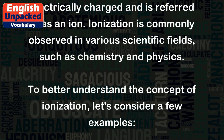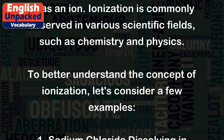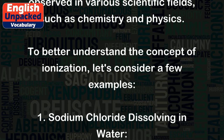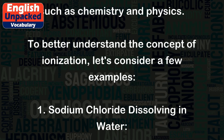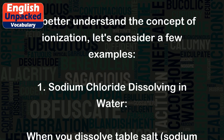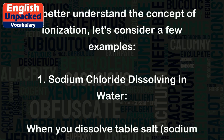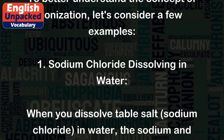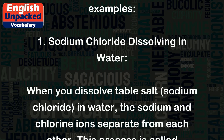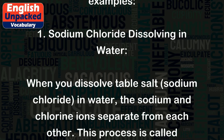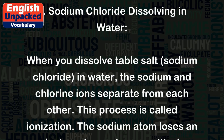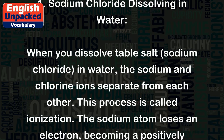To better understand the concept of ionization, let's consider a few examples. Example 1: Sodium chloride dissolving in water. When you dissolve table salt, sodium chloride, in water, the sodium and chlorine ions separate from each other. This process is called ionization.